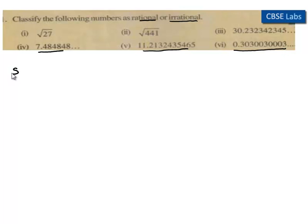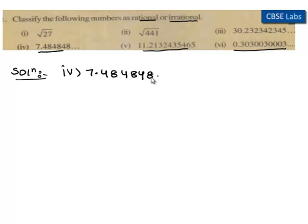Let's come to the solution. Here we need to find whether the number is irrational or rational. As we know, a number that is non-terminating is said to be an irrational number, and a number that is terminating is said to be a rational number.